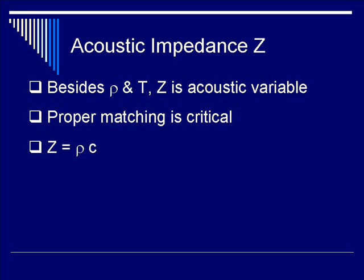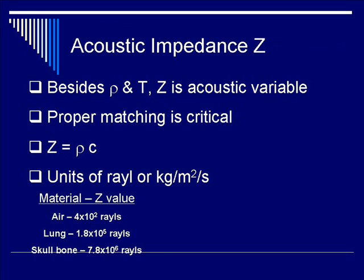Formally, acoustic impedance Z is defined as a product of rho, the density, and C, the speed of sound in the material of interest. The units of measurement for Z is rayl, which is kilogram per meter squared per second. If you look at the representative values of the acoustic impedance of air, lung, and bone, you see a wide range which mimics the values that you observe for the speed of sound in these materials.